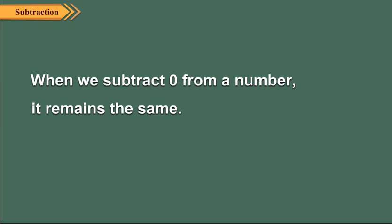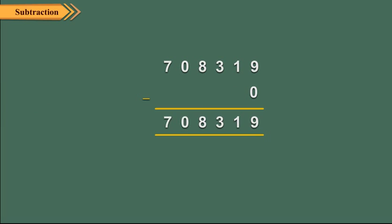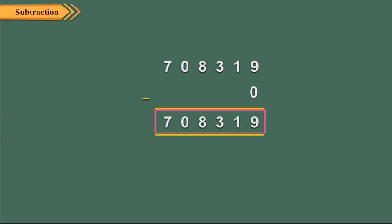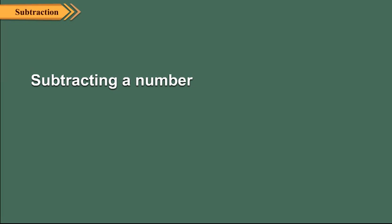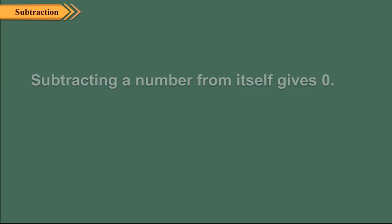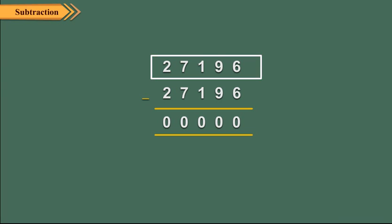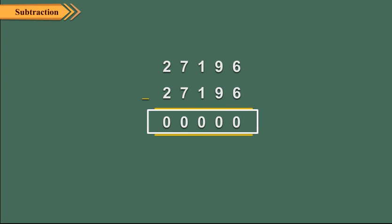When we subtract 0 from a number, it remains the same. For example, subtracting 0 from 708319, we get 708319. Subtracting a number from itself gives 0. For example, subtracting 27196 from 27196, we get 0.